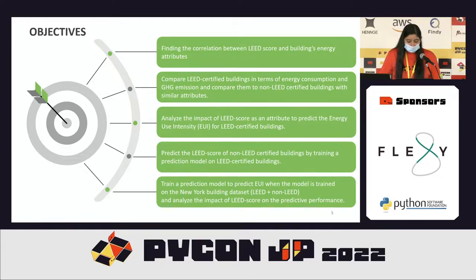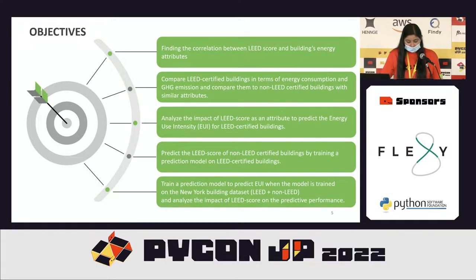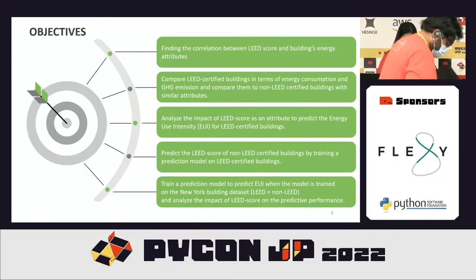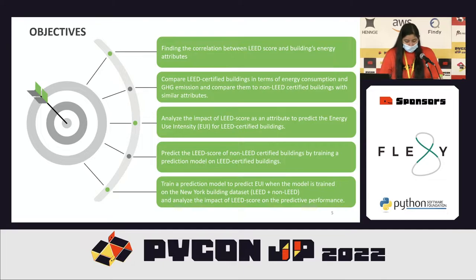To reach the aforementioned goal, I have five main objectives. Objective one: finding the correlation between LEED certified buildings' achieved LEED score and the buildings' energy and GHG attributes. Objective two: comparing LEED certified buildings in terms of energy and GHG savings versus non-LEED certified buildings with similar attributes. Objective three: analyzing the impact of LEED score as an attribute to predict the energy use intensity, EUI, for LEED certified buildings. Objective four: predicting the LEED score for non-LEED certified buildings to overcome limited valid data points. Objective five: training a predictive model to predict EUI on the complete building dataset and analyzing the impact of LEED score on predictive performance.